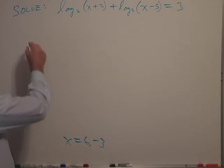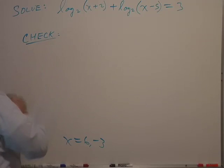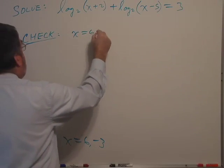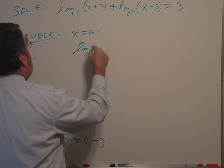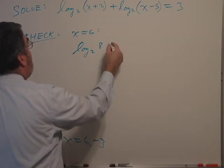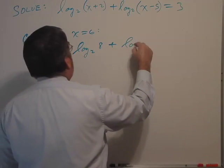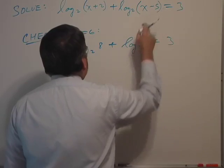Now to check. Of course we're going to plug both numbers in. So the first one, x equals 6. I get log base 2 of 8 (6 plus 2 is 8) plus log base 2 of 1 (6 minus 5 is 1) equals 3.